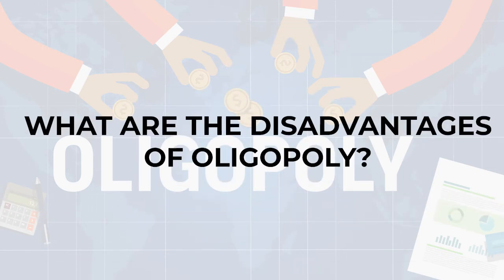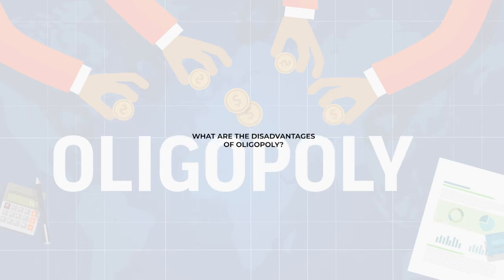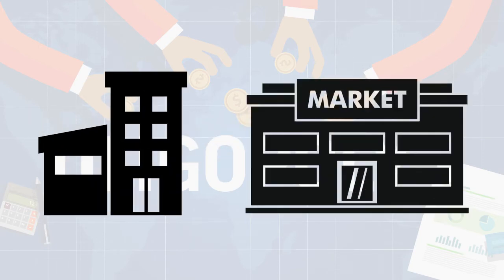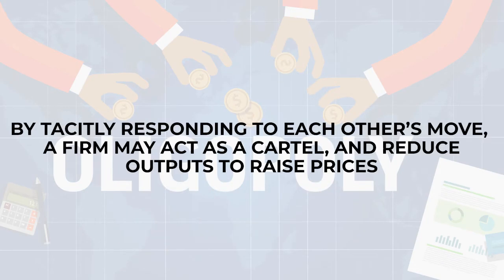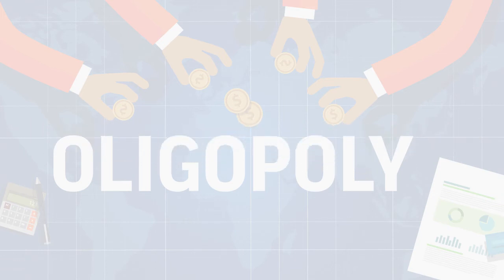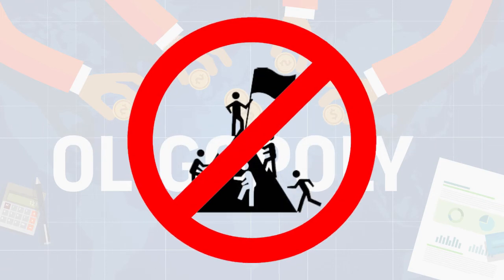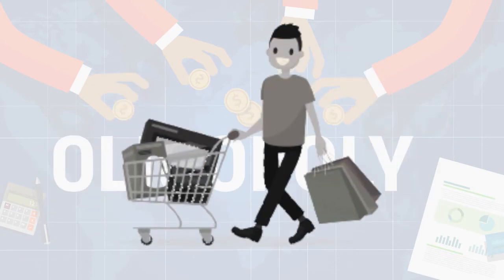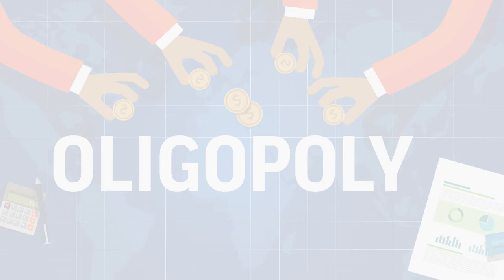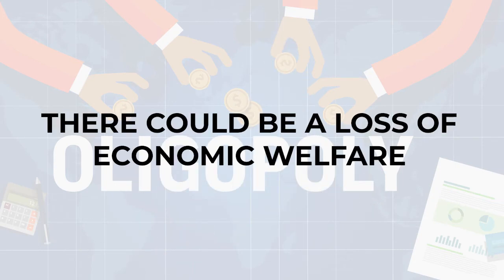And what are the disadvantages of Oligopoly? Since there are few firms dominating a market, the choice for consumers is relatively less. Secondly, by tactically responding to each other's moves, a firm may act as a cartel and reduce output to raise prices. Thirdly, competition lags in an Oligopoly market and firms could make consumer decision-making a complex process. Fourthly, when consumers are manipulated at a large scale, there could be a loss of economic welfare.